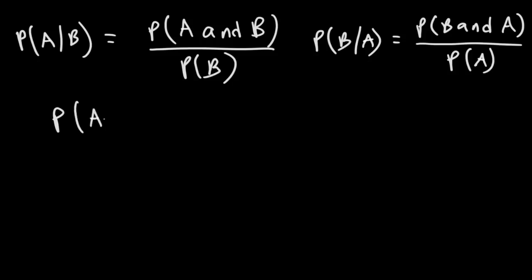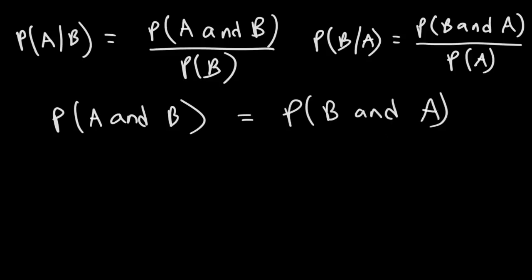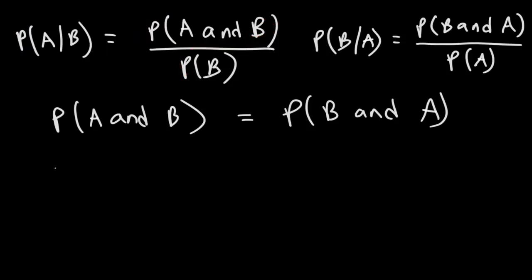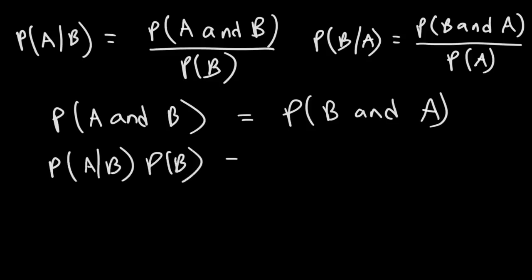Now the probability that event A and B will occur is equal to the probability that event B and A will occur. So basically I'm setting these two equal to each other. This is equal to the probability of A given B times the probability of B. On the right side, the probability of B and A occurring is the product of the probability of B occurring given A has already occurred, times the probability of event A occurring.